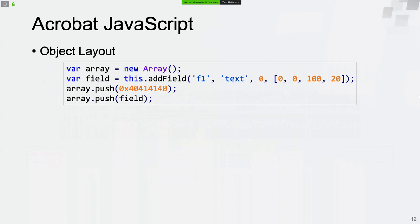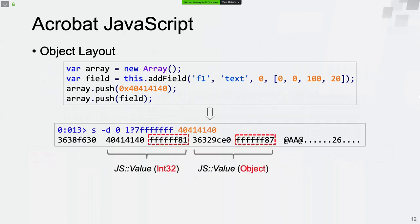In the following slides, I will talk about the layout of JavaScript objects in Adobe Reader. We define an array where the first element is a field object, created by calling the Acrobat JavaScript API addField. The second element is a flag value used to locate the array object in memory. We can search the flag value in WinDbg and find the array elements. Each element is a JSValue object: the first 4 bytes represent the value, the second 4 bytes represent the type. FFFFFFF81 is the type value for 32-bit integer and FFFFFFF87 is the type value for object.